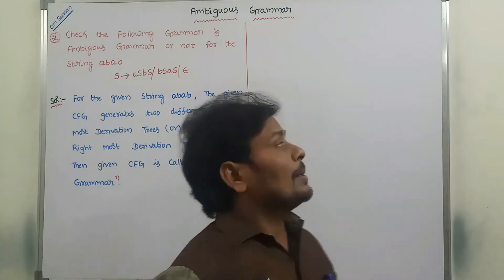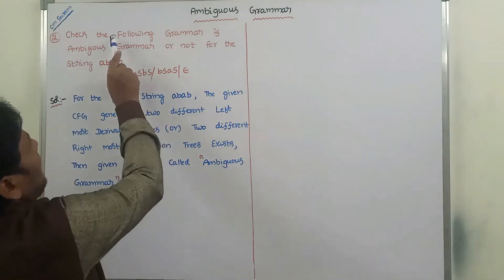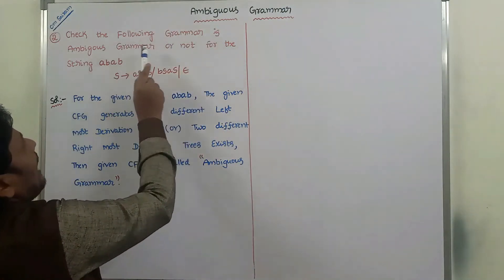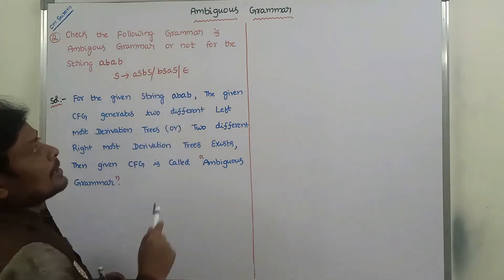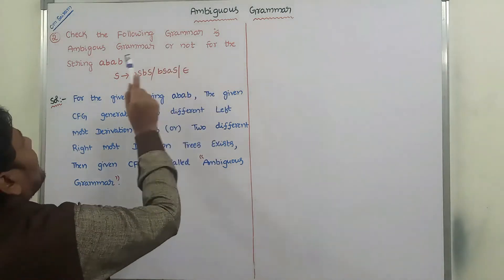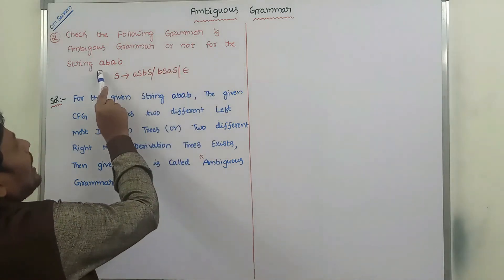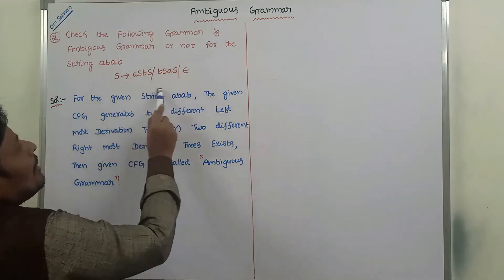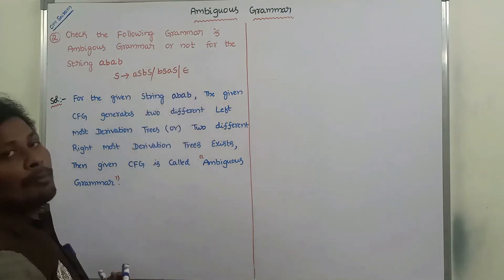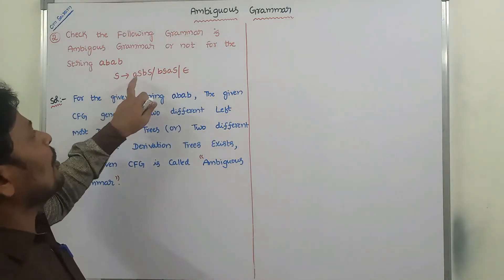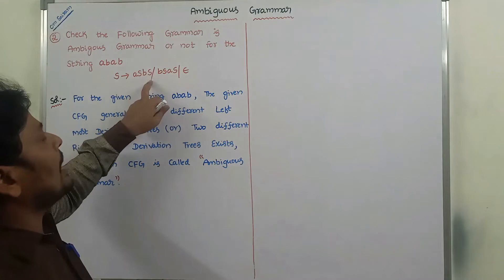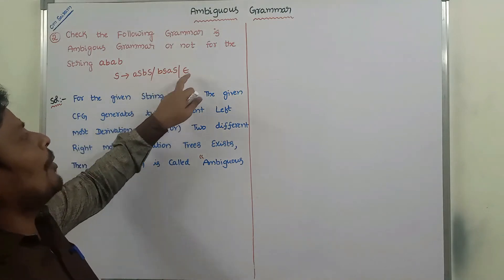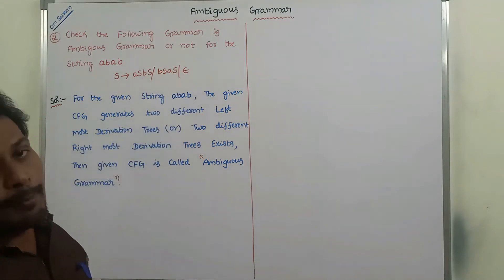Now in this video we have to discuss one more example problem on ambiguous grammar. The given problem: check whether the following grammar is ambiguous or not for the string abab. The given context-free grammar is S → aSbS | bSaS | ε.